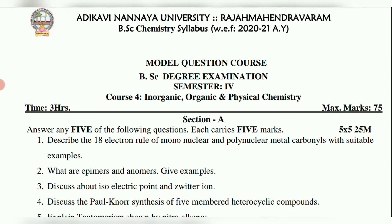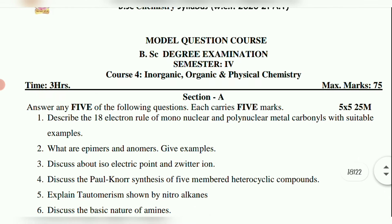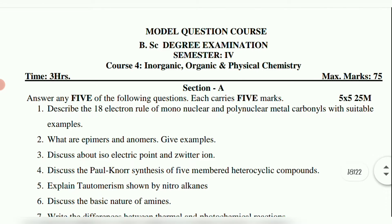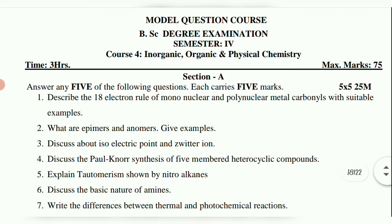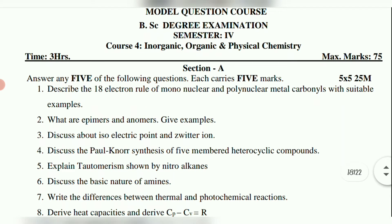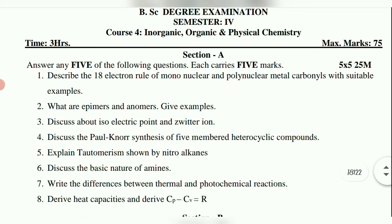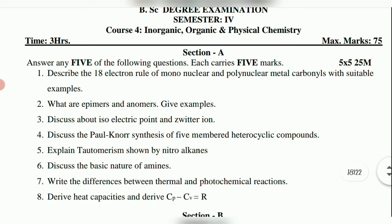Question 2: What are epimers and anomers? Give examples. Question 3: Discuss isoelectric point and zwitter ion. Question 4: Discuss the Paal-Knorr synthesis of five-membered heterocyclic compounds. Question 5: Explain tautomerism shown by nitroalkanes. Question 6: Discuss the basic nature of amines. Question 7: Write the differences between thermal and photochemical reactions. Question 8: Derive heat capacities and derive Cp minus Cv equals R.